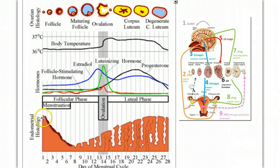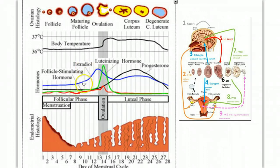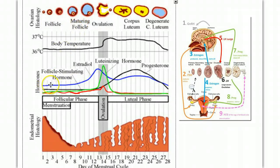Day one of the new menstrual cycle is the first day of the flow phase, as the endometrium wall is breaking down. During this time, levels of FSH — shown in red — and LH — shown in green — start to rise upon stimulation from GnRH from the hypothalamus. As FSH and LH start to rise, a new follicle starts to mature. As the follicle matures, it starts secreting estrogen, and we see the buildup of the endometrium wall.